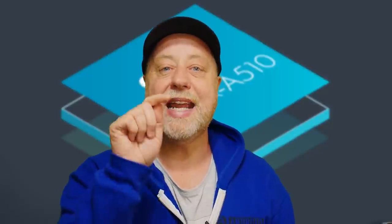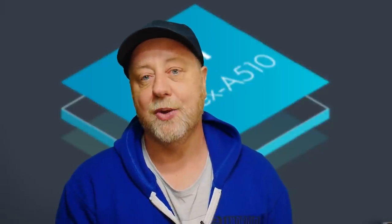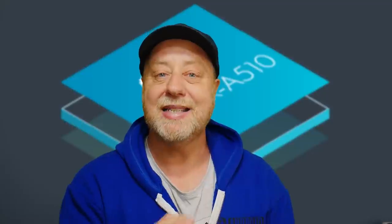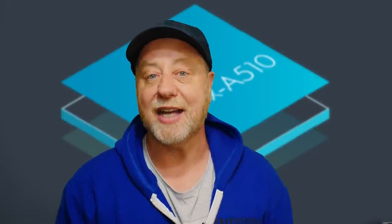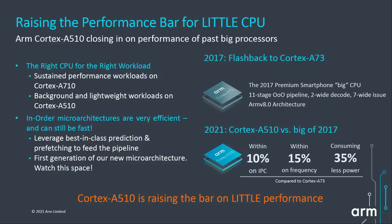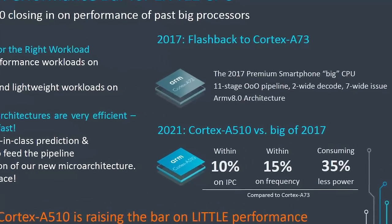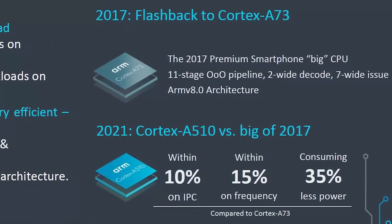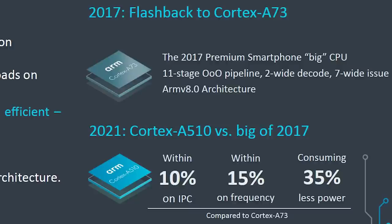The A510 remains an in-order CPU. But the question is: could ARM maintain power efficiency and boost performance while staying in-order? The answer is yes. ARM put out information comparing the A510 to the Cortex-A73. The A73 was a big core — an 11-stage, out-of-order pipeline, advanced at the time, 2017.